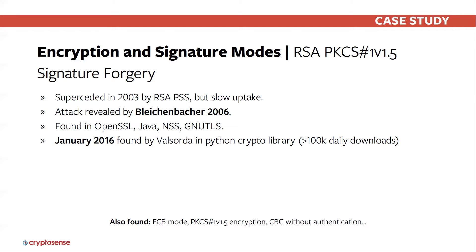At the crypto conference I mentioned in part one — the big cryptographic conference that happens every year in Santa Barbara — there is a rump session, a very famous event in the cryptographic world. At the rump session in 2006, a guy called Daniel Bleichenbacher, who now works as head of cryptography at Google, revealed an attack on RSA PKCS #1 where, essentially with a bit of blackboard mathematics, you can forge a signature. The attack relied on two specific things: you had to be using an RSA key with a public exponent of three, and you had to have a particular bug in the way your ASN.1 parsing works for the structures in this signature.